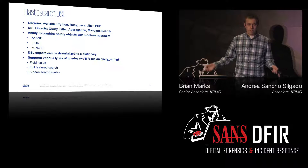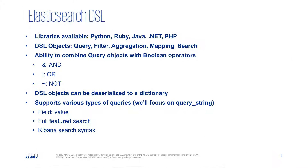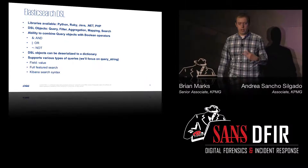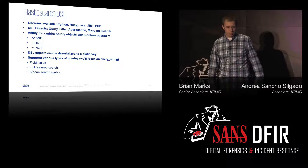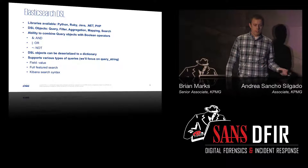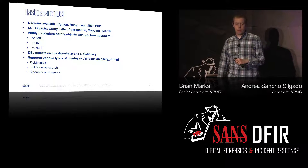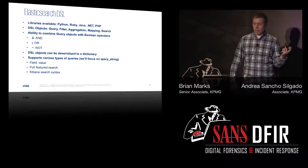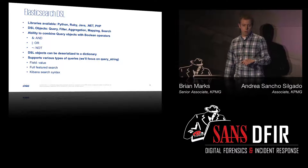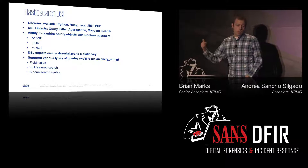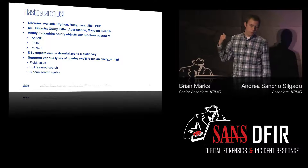So the Elasticsearch DSL library — we're going to be using Python, but the same functionality is available in many other languages. There are objects in the DSL library: today we're going to be dealing with queries, aggregations, and searches. The really cool thing about the DSL language is the query objects — they can be combined with Boolean operators: an ampersand for AND, a pipe for OR, and a tilde for NOT. We'll go through some examples of what we can do with that.